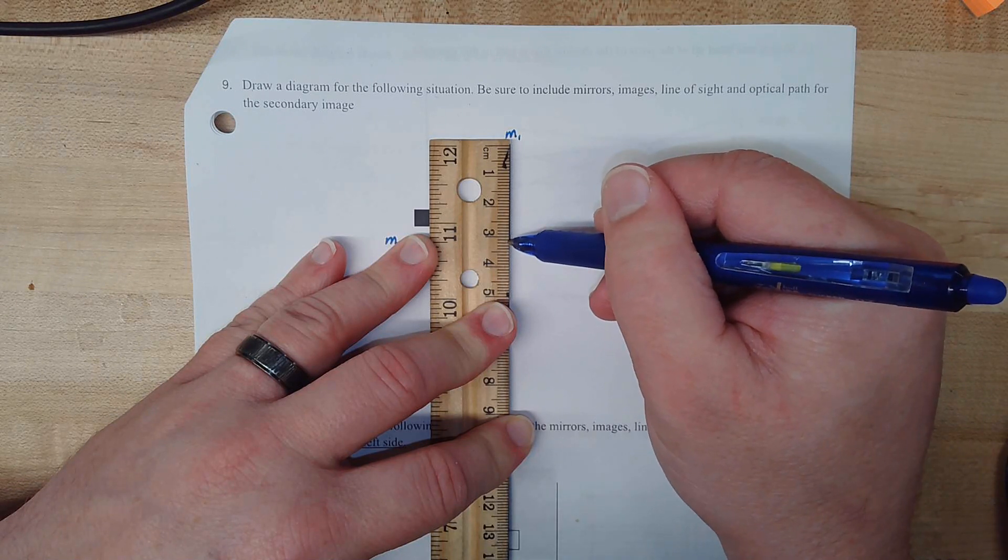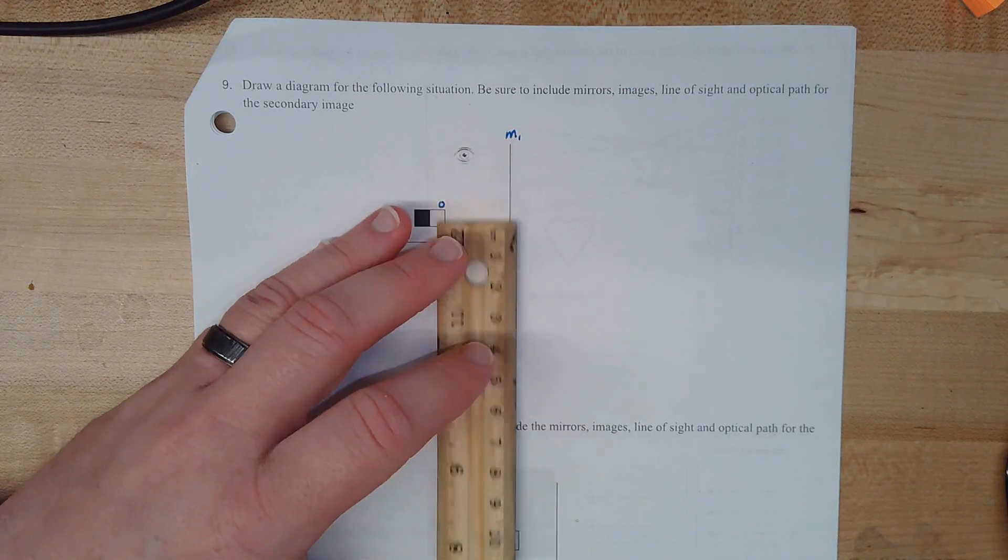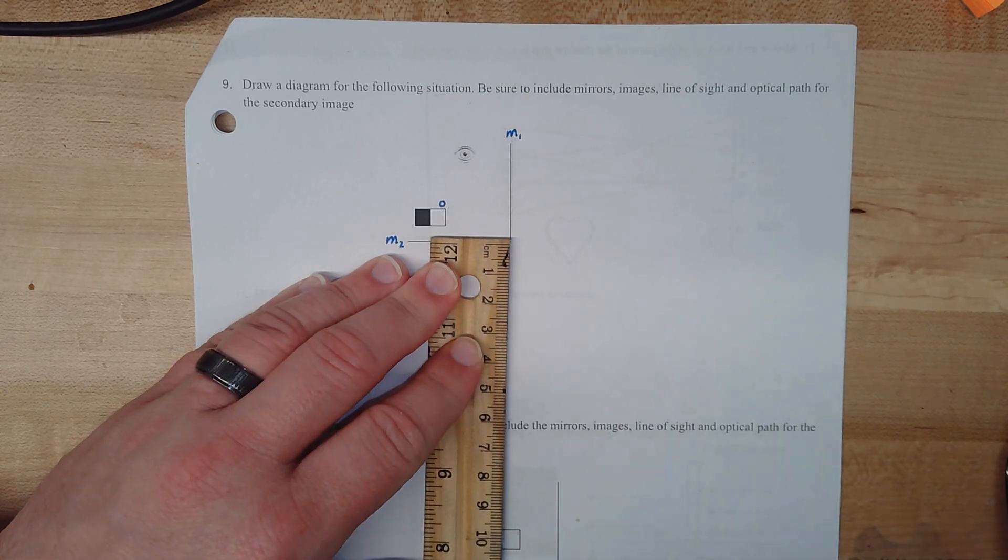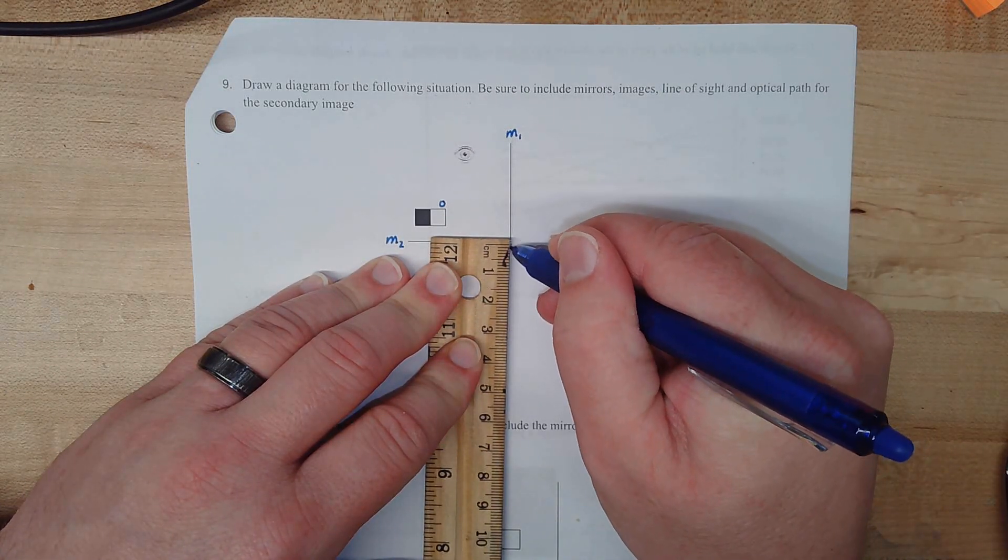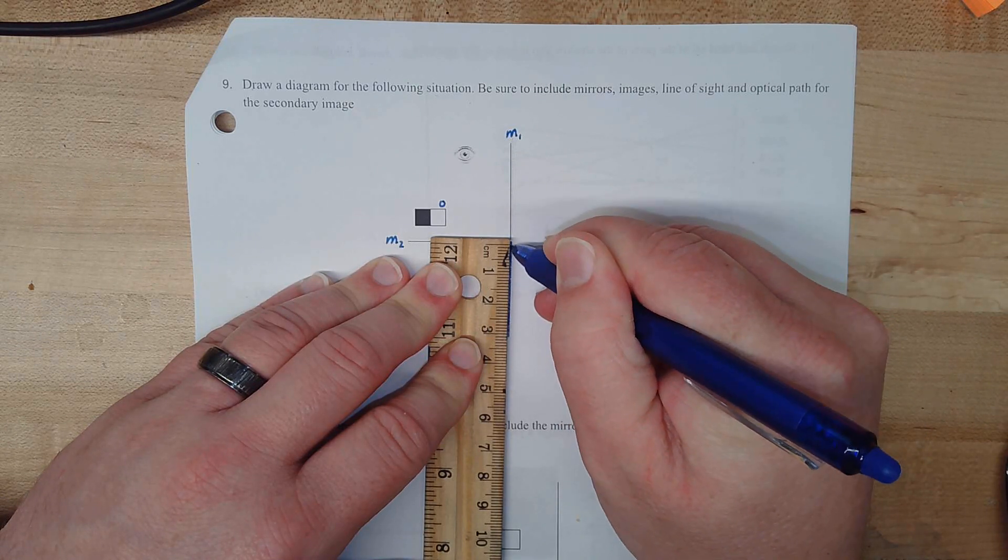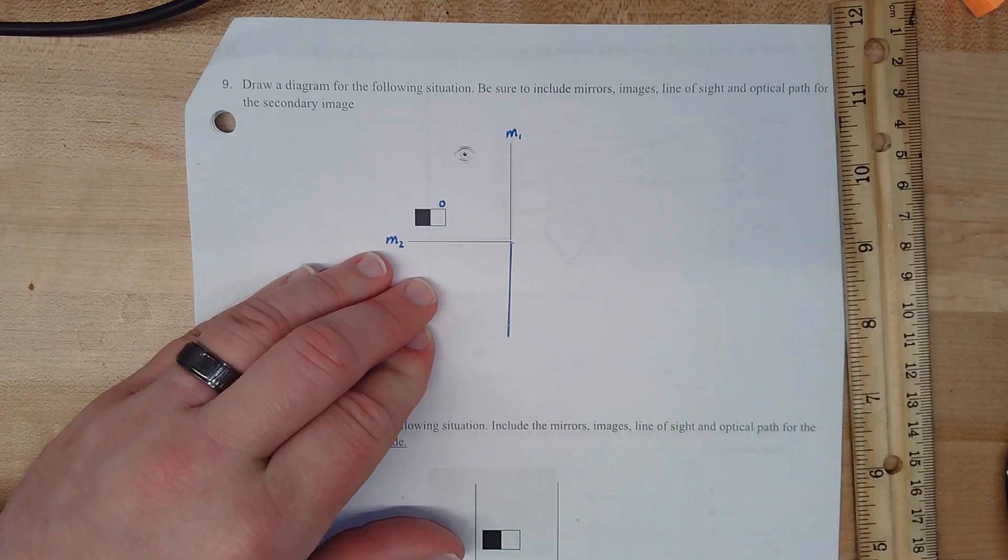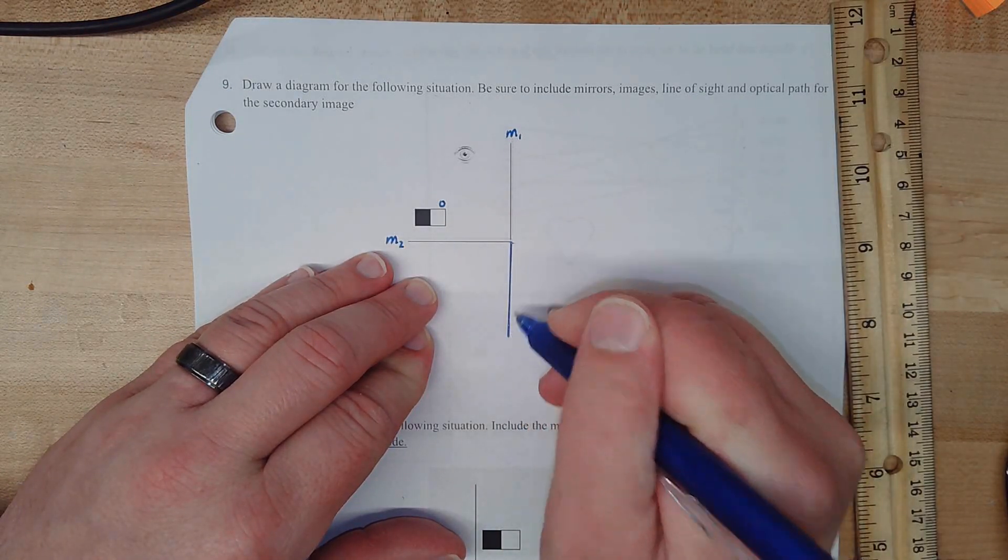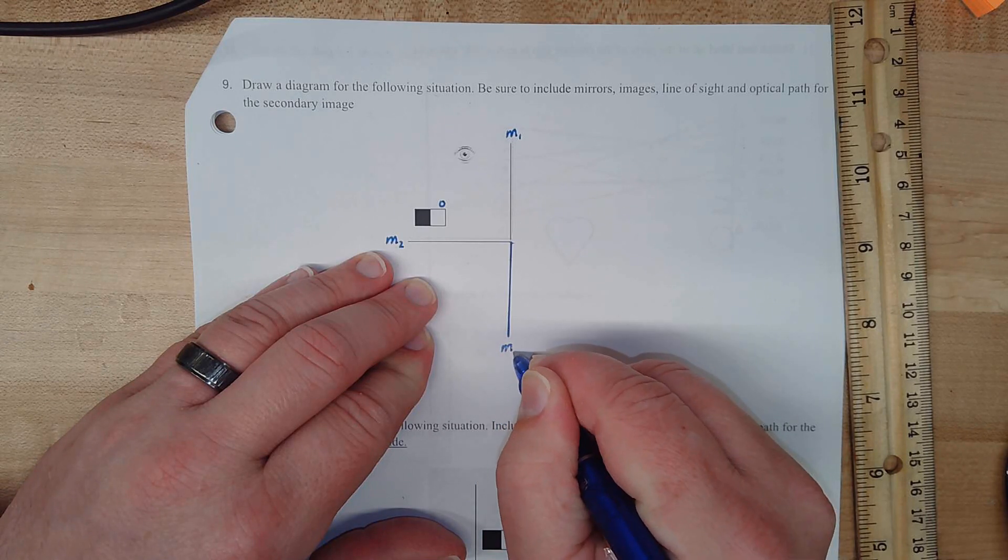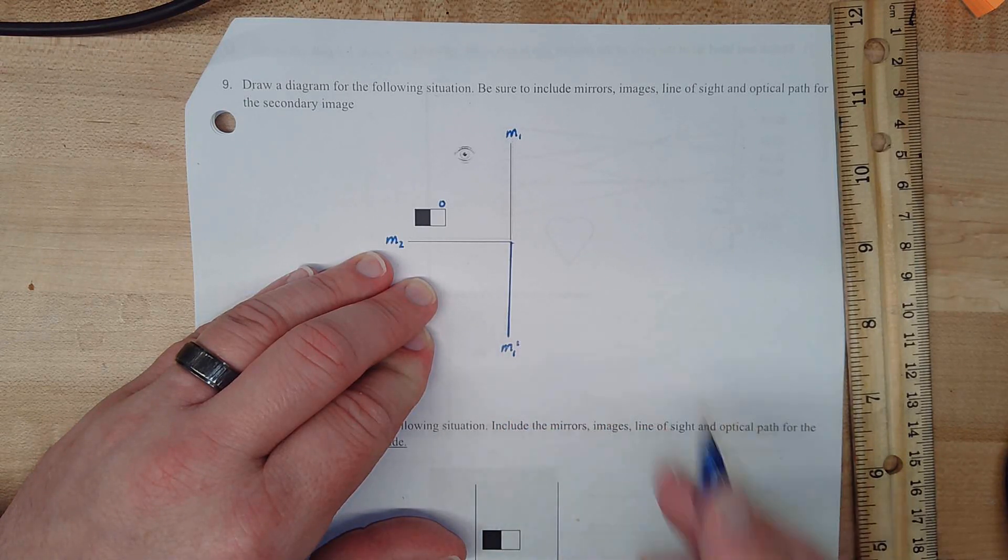I'm seeing this one at about 3.2 centimeters. And so mirror 1 is going to get reflected exactly the same size on the opposite side. I'm just going to measure it and try to carefully line that up, and it's going to be exactly the same length on the opposite side. This is an image of mirror 1, so I'm going to call it mirror 1 prime.